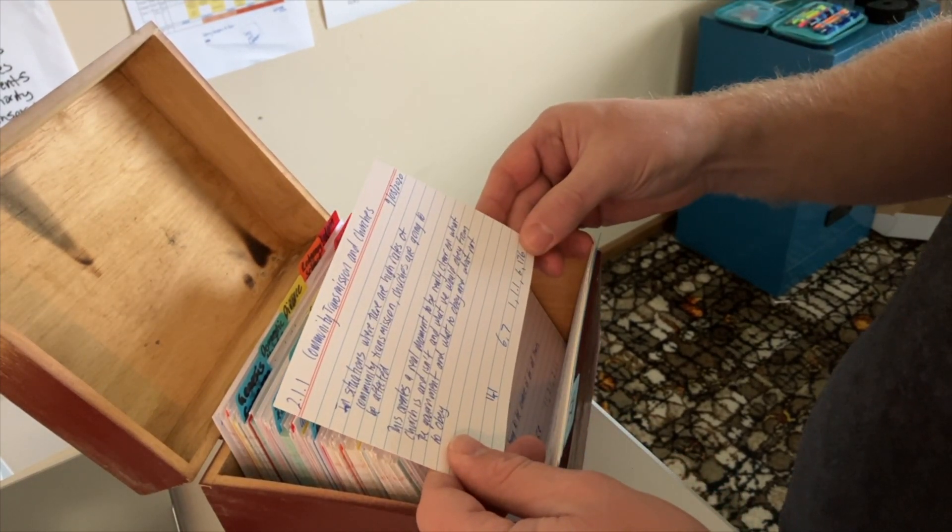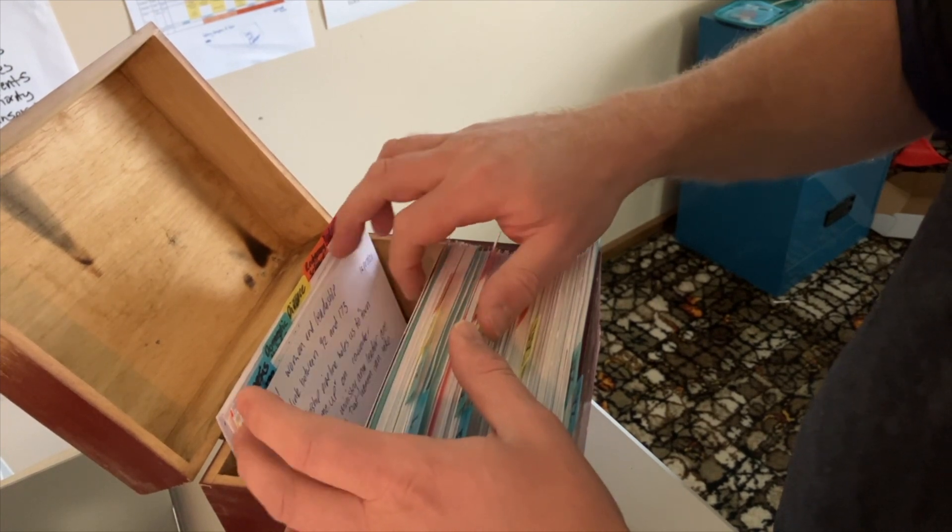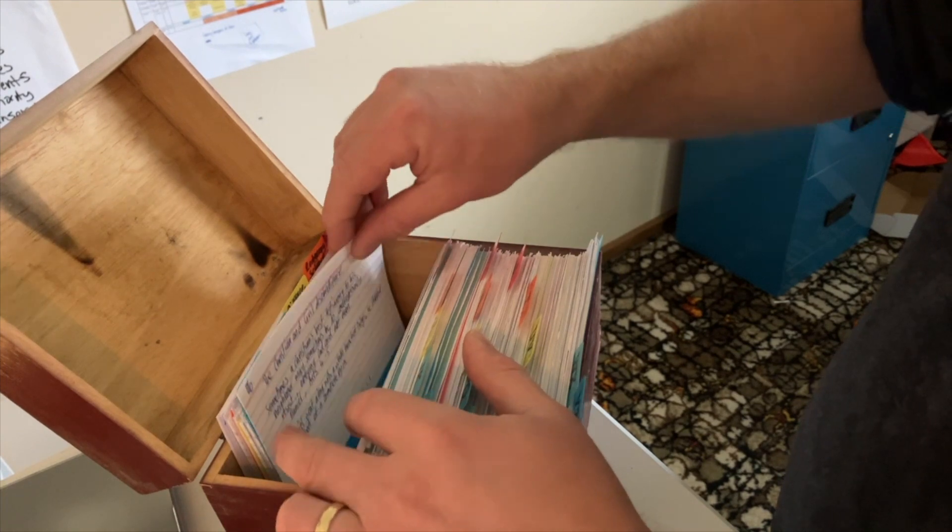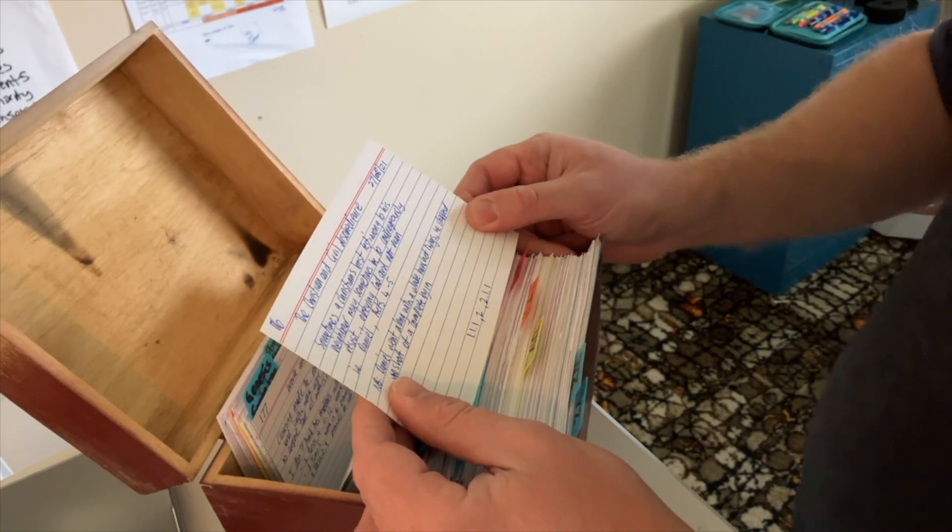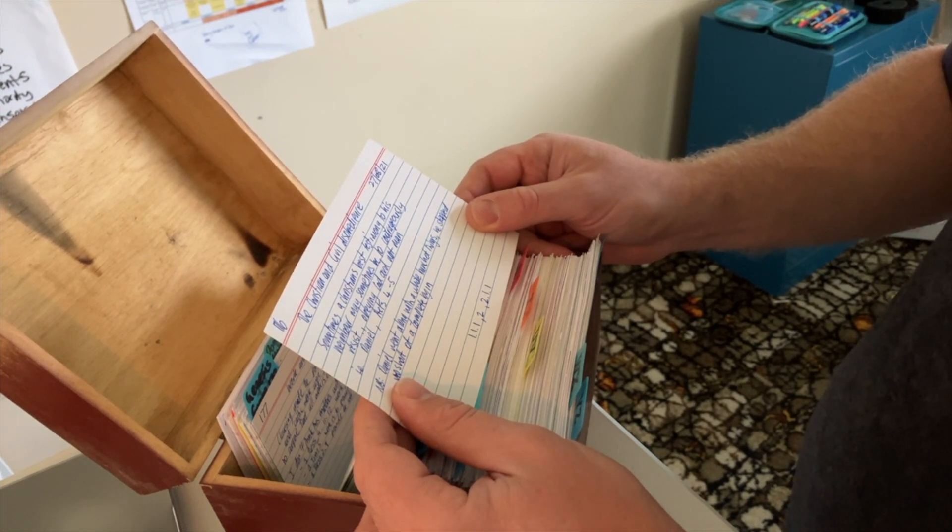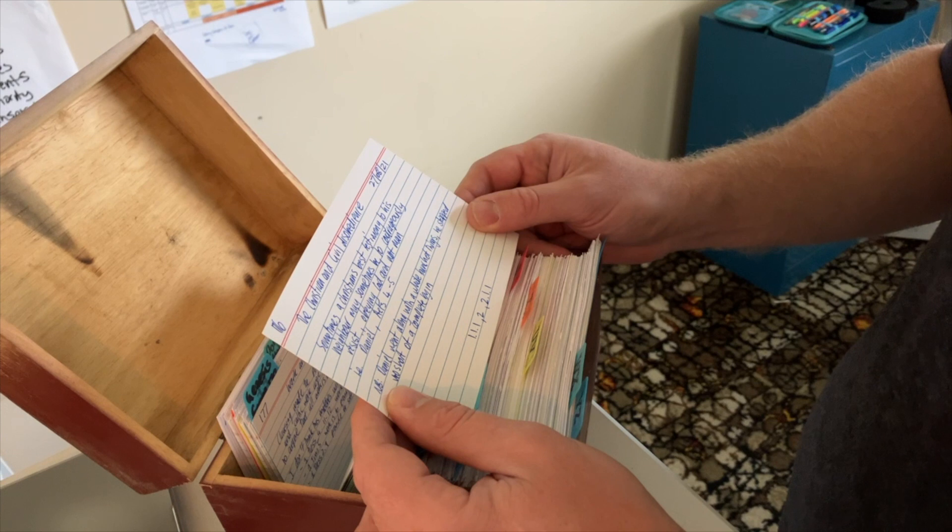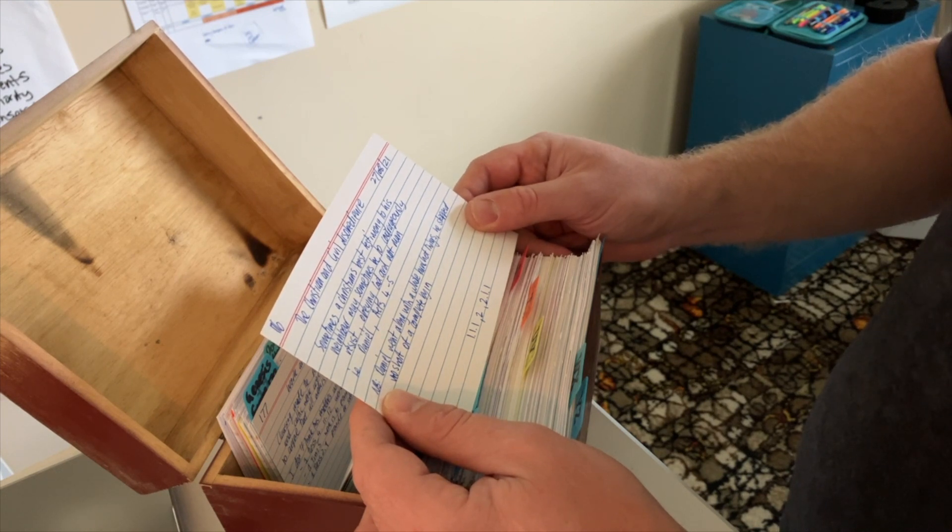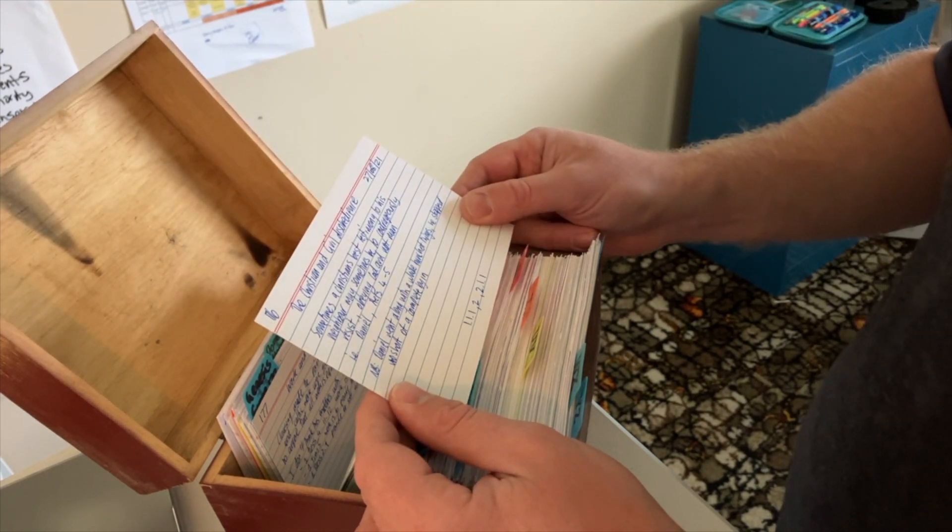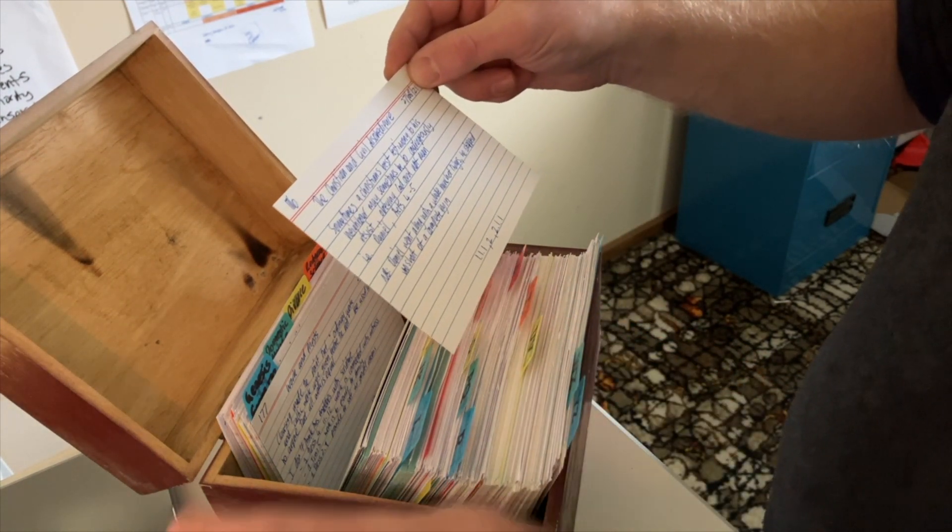Card 176 - The Christian and civil disobedience. Sometimes a Christian's best testimony to his neighbour may be to courageously resist obeying God and not man as in Daniel and Acts 4 and 5. But I've noted that Daniel also went along with a whole bunch of things with his hostile government in Babylon. He stopped short of a complete buy-in to their anti-God culture. That's a really important point that personally I obeyed lots of stuff that the government asked us to do even if it was weird.